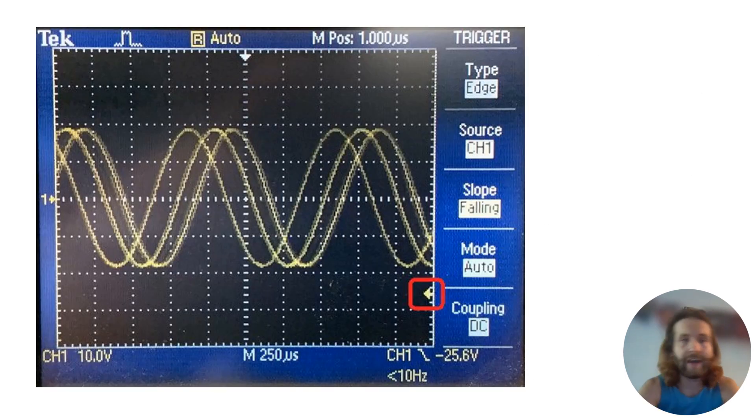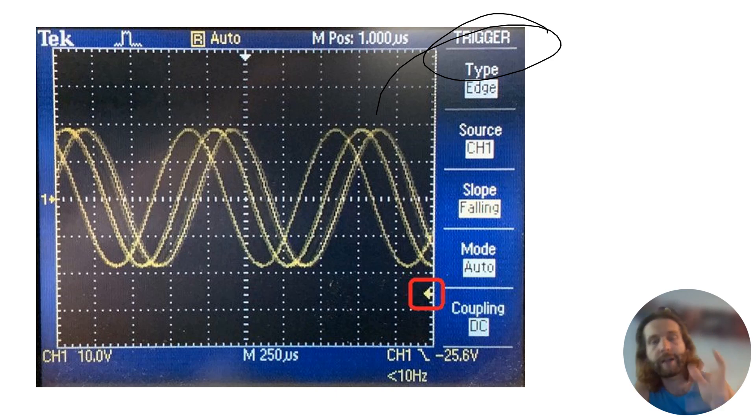So let's next talk about this function called triggering. Triggering allows us to dictate and tell the oscilloscope when to start drawing the waveform, because without triggering the waveform would just scroll across the screen continuously, making it impossible to analyze. So with triggering we can decide when this waveform is being read, when it's stopped being read, so then we can actually analyze them.